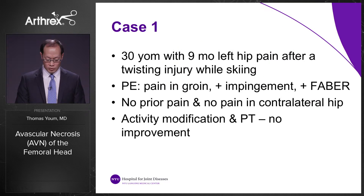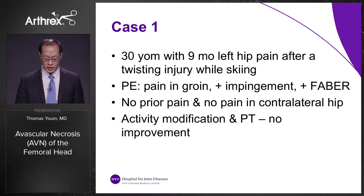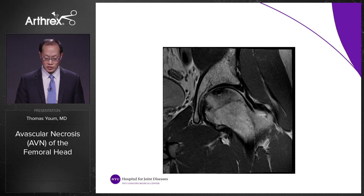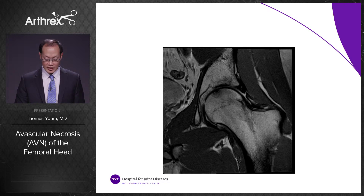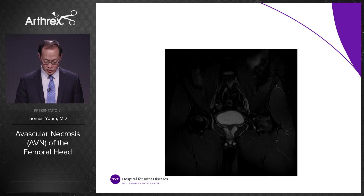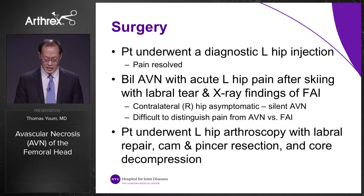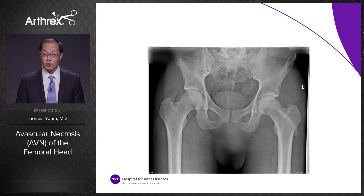The first case is a 30-year-old male with nine months of left hip pain after a twisting injury while skiing. On physical exam he had groin pain with a positive impingement and FABER test, and no pain in the contralateral hip. Activity modification and physical therapy led to no improvement. MRI showed an avascular necrosis lesion of the femoral head and a labral tear, with the AVN located anteriorly on sagittal imaging. Bilateral hip AVN was confirmed. The patient underwent a diagnostic left hip injection with pain resolution, then left hip arthroscopic surgery with labral repair, cam and pincer resection, and concurrent core decompression, visible on post-op x-rays.